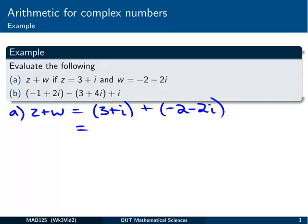So we've got to add the real parts, so that's those bits, and then we've got to add the imaginary parts. Remember there's a little 1 in there. So we're going to get 3 plus minus 2 is going to be 1, and 1 plus minus 2 is minus 1i. So we'll just pop that in there.